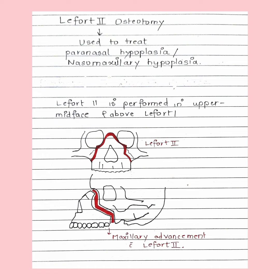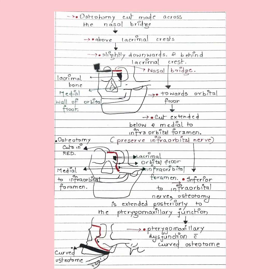We give Le Fort two osteotomy cuts, then mobilize the maxilla, reposition it to the desired position, and do the fixation — that is, mini plates are given — and Le Fort two is completed. There are two approaches: vestibular, that is the buccal sulcus approach, and the coronal approach. After the incisions are given, the osteotomy cuts are made.